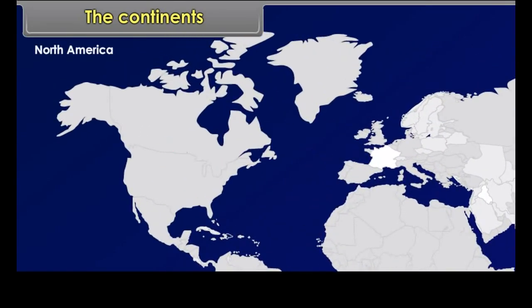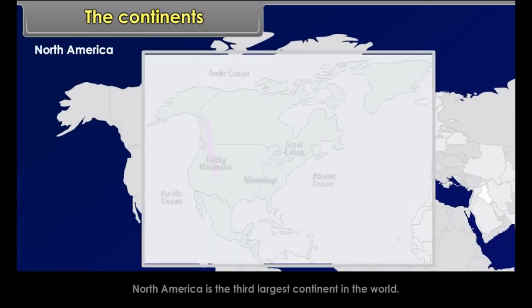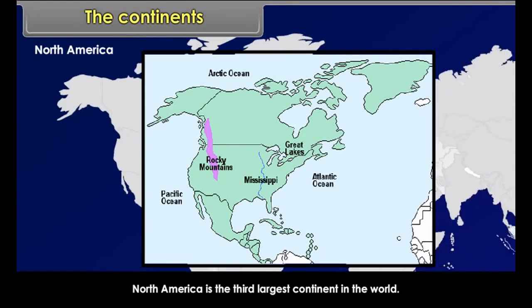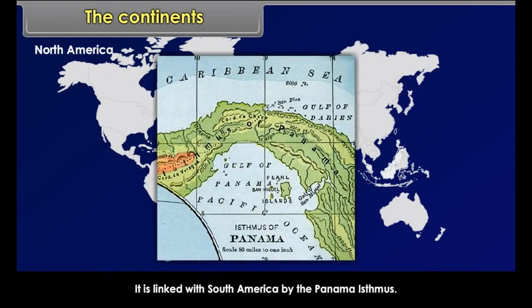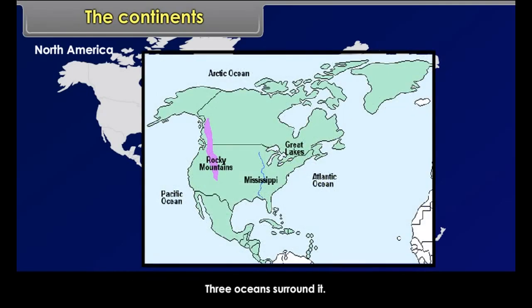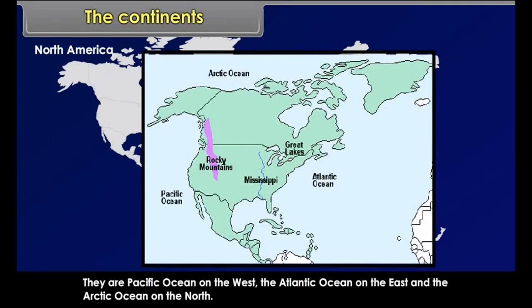North America. North America is the third largest continent in the world. It is linked with South America by the Panama isthmus. It lies completely in the northern and western hemisphere. Three oceans surround it: the Pacific Ocean on the west, the Atlantic Ocean on the east, and the Arctic Ocean on the north.